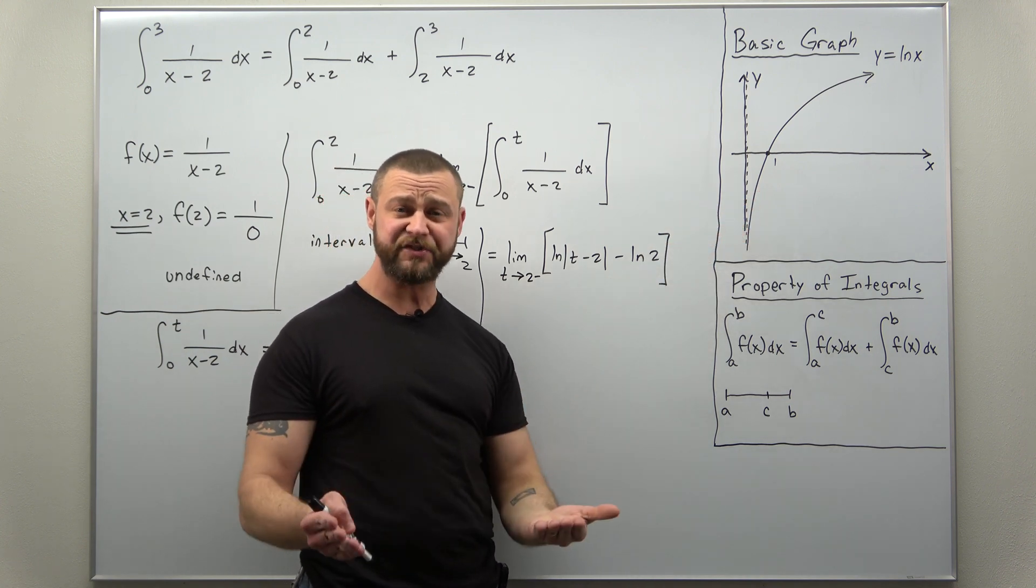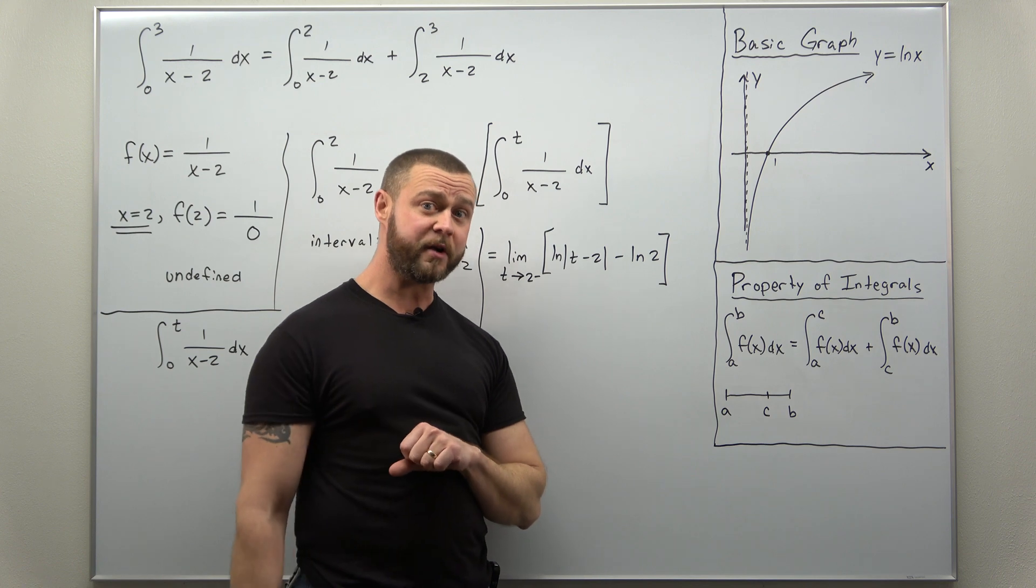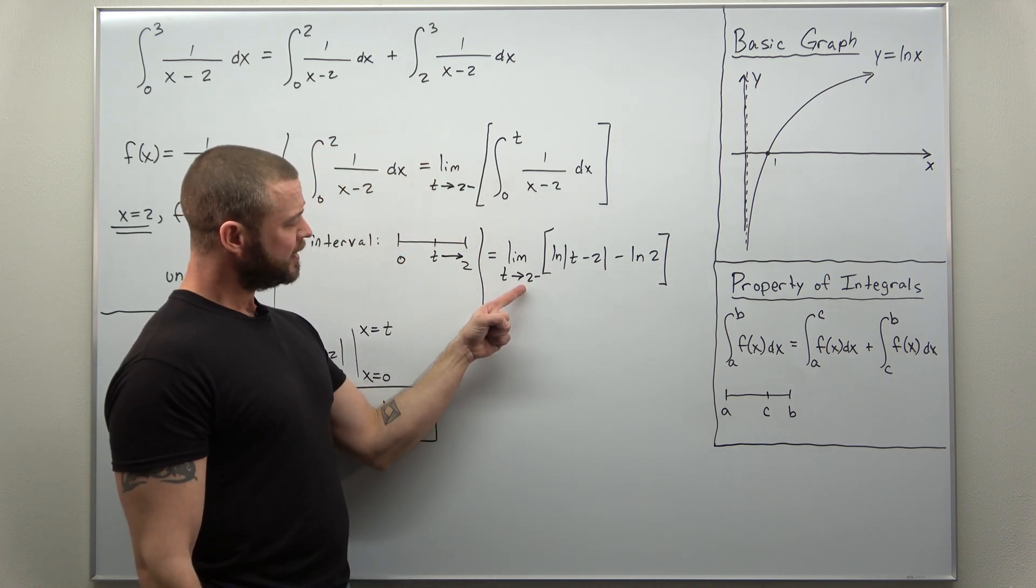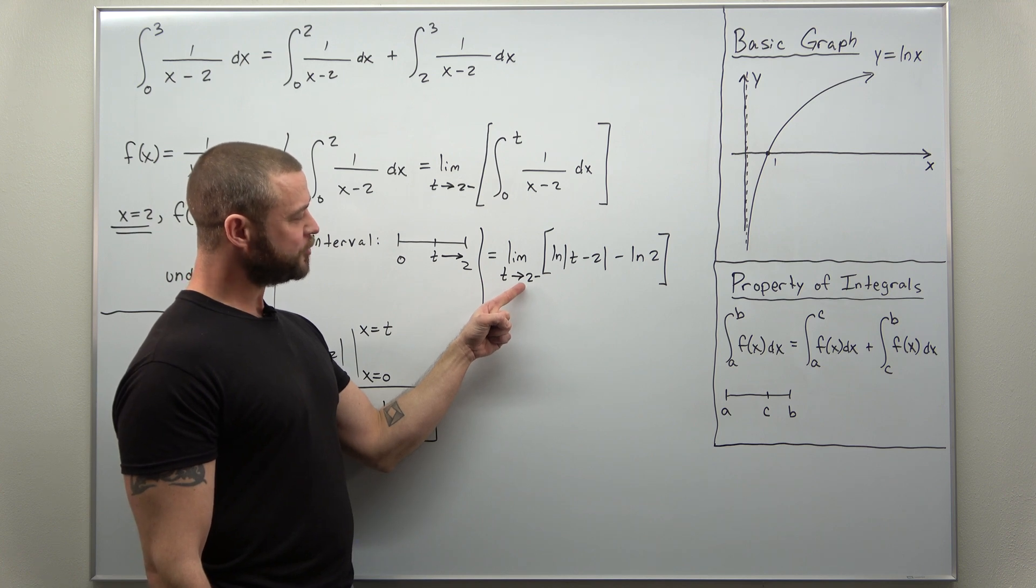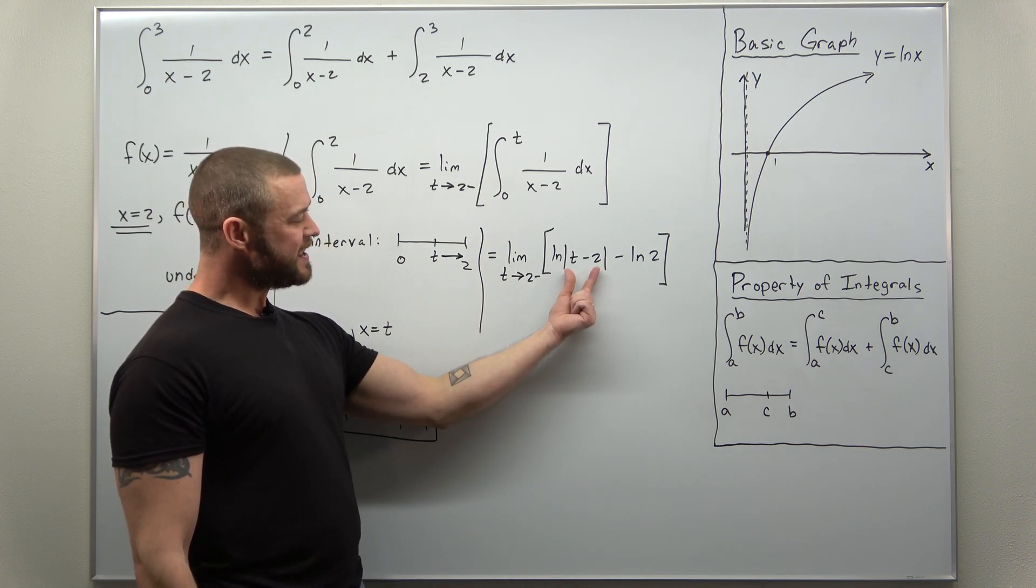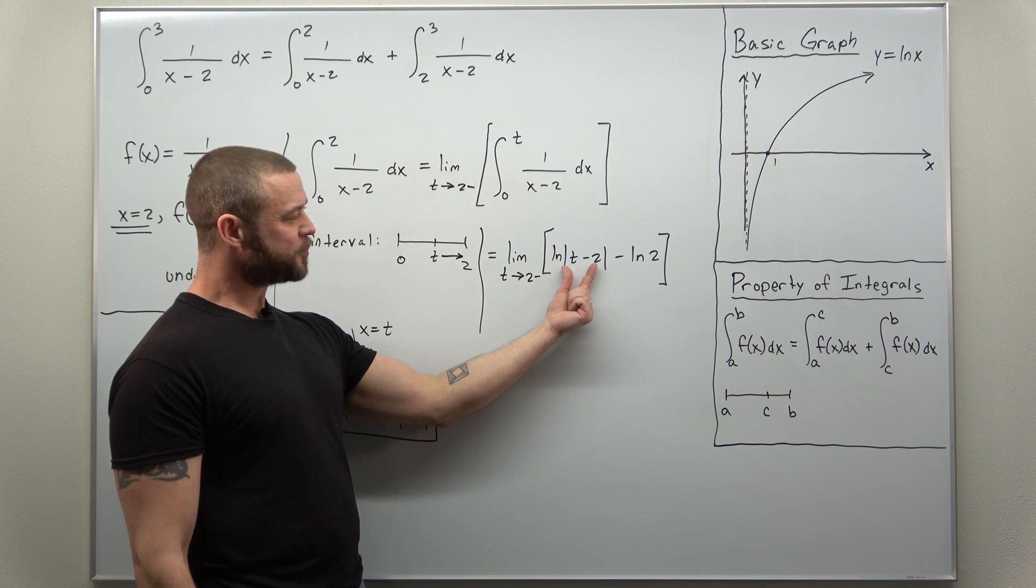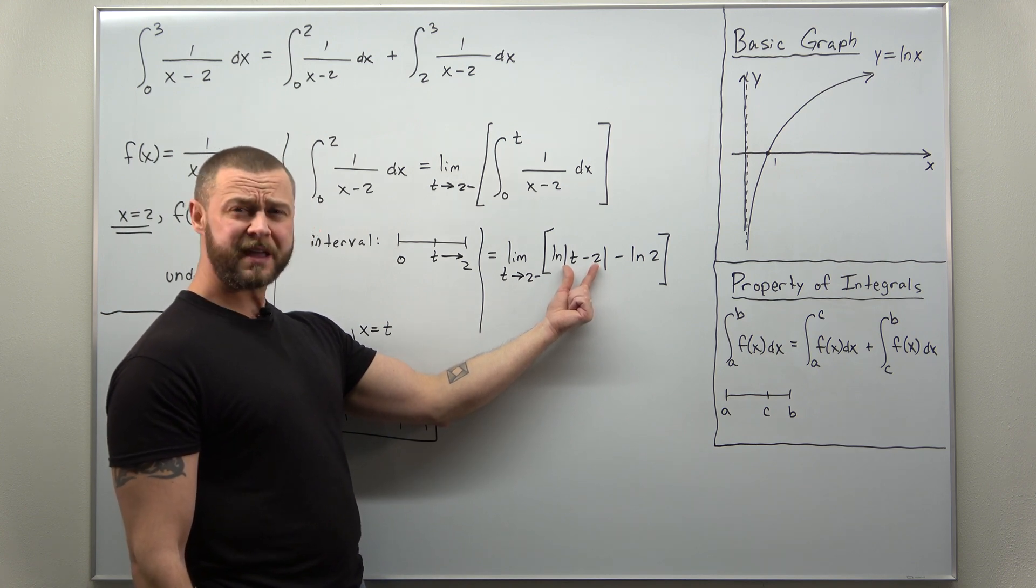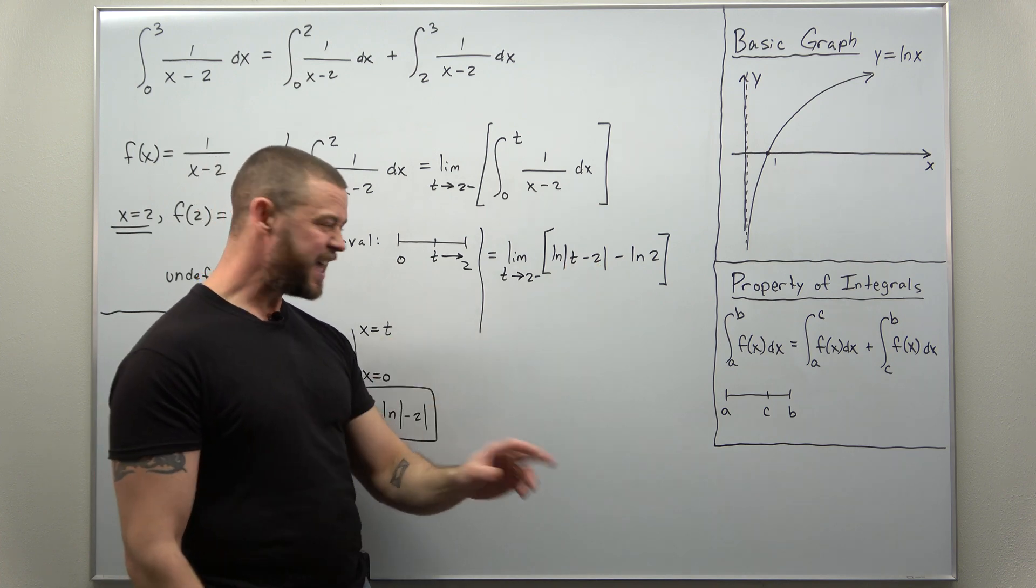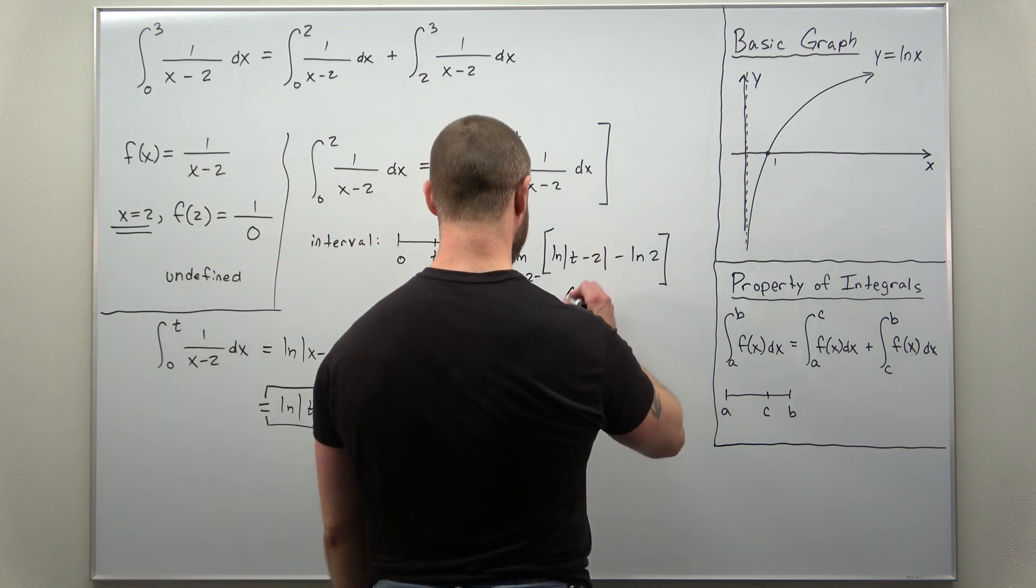It pops up enough times in the calculus sequence that you'll want to be familiar with it. Let's see what's happening here. We're letting t approach 2, so this quantity inside, as t approaches 2, that's going to be getting really small. Without plugging anything in, let's take a look at this part.